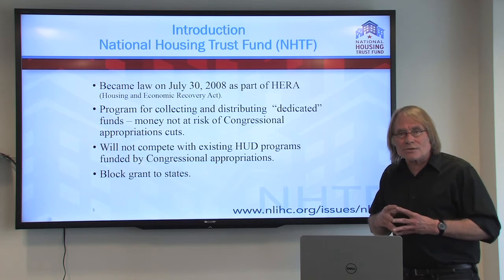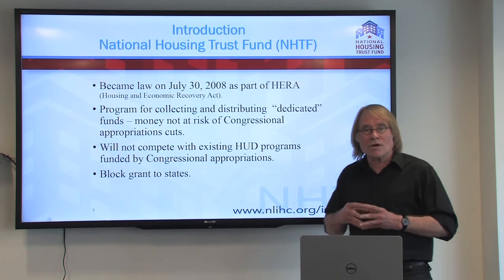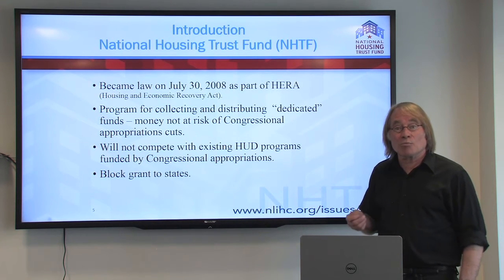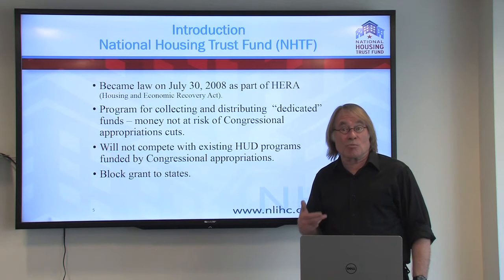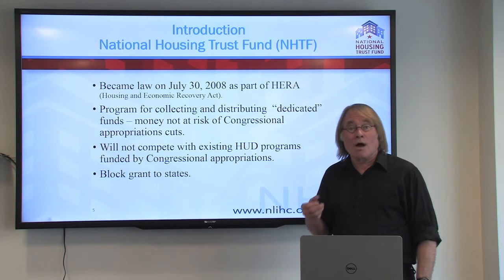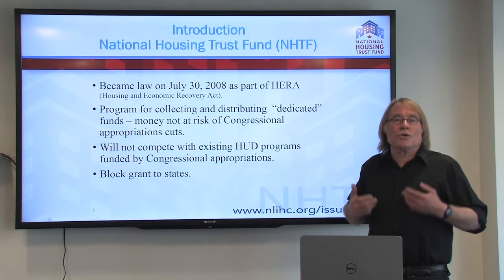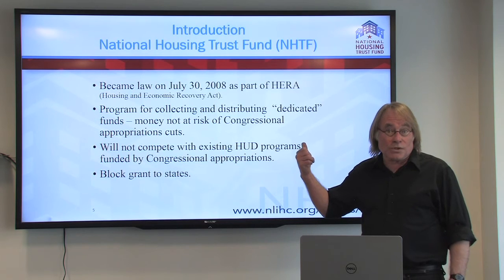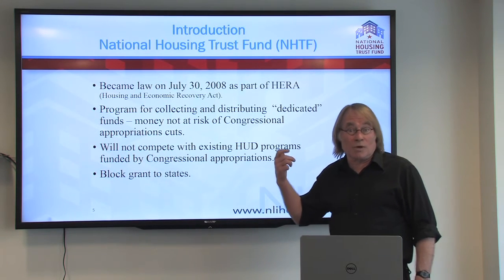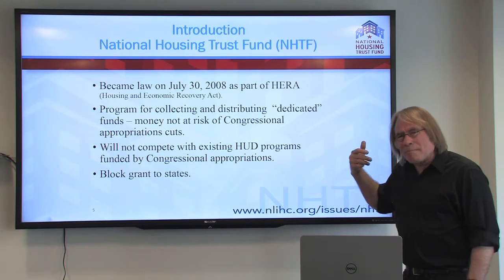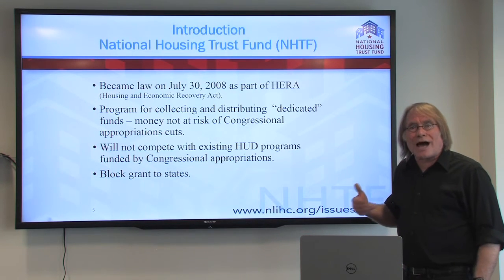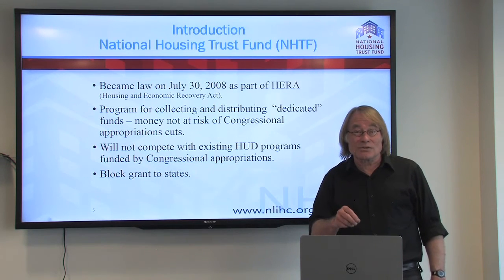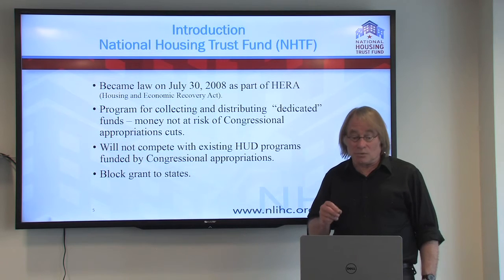I want to stress that the intent of the National Housing Trust Fund never was and never should be to substitute for existing HUD programs that are subject to the Congressional appropriations process. The intent is to augment — to increase the amount of money available to help meet this grave shortage of housing affordable to extremely low-income households. Basically, the National Housing Trust Fund is going to operate as a block grant to the states. It will not go directly to cities and counties the way HOME and CDBG money do, so it's quite different.